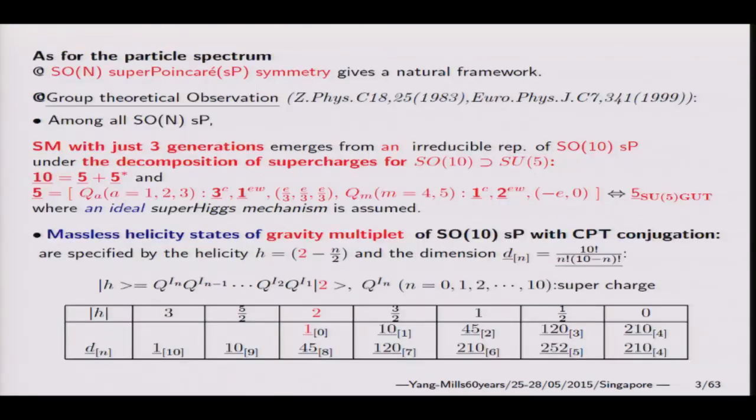As for three generations, I found that three generations is included in SO(10) superpoincaré symmetry, because SOM symmetry is very natural for superpoincaré group. Therefore, N equals 8 maximally extended N equals 8 was investigated by Gell-Mann, but it was too small. Therefore I extend to N equals 10. Ten supercharges, we divide 5 plus 5 star. They are exactly the same quantum number of SU(5) GUT.